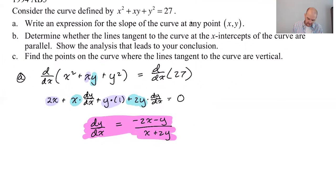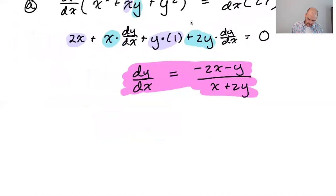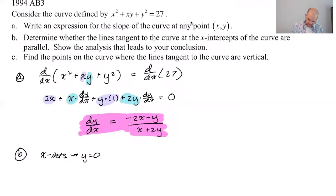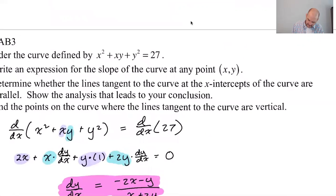Okay. Determine whether the lines tangent to the curve at the x-intercepts of the curve are parallel, show the analysis. So at the x-intercepts, y is equal to zero. If y is equal to zero, then this thing becomes a thing. So let me write down what I was thinking there. I was thinking x-intercepts means that y is equal to zero. So if y is equal to zero, then let me bring this down.